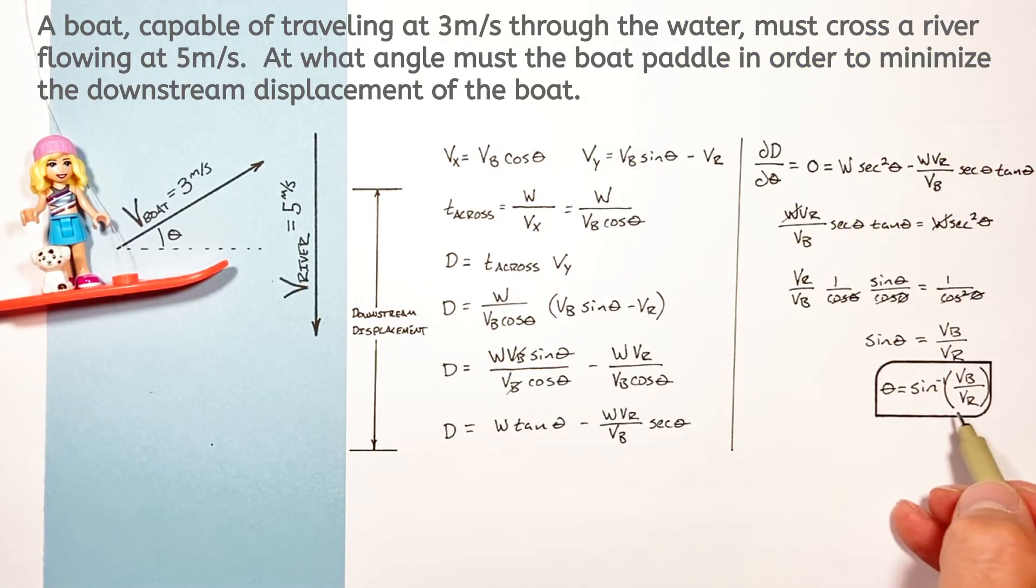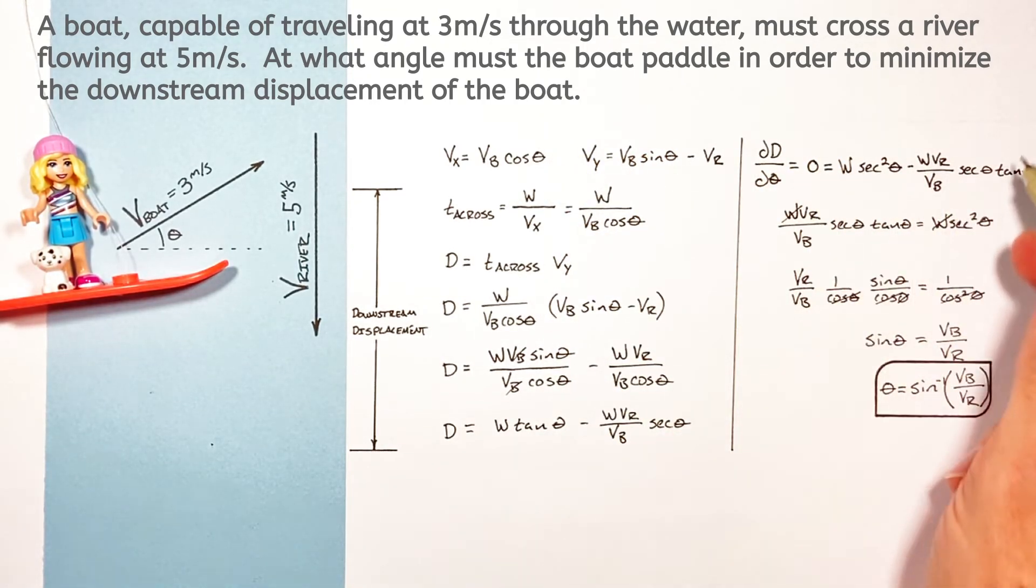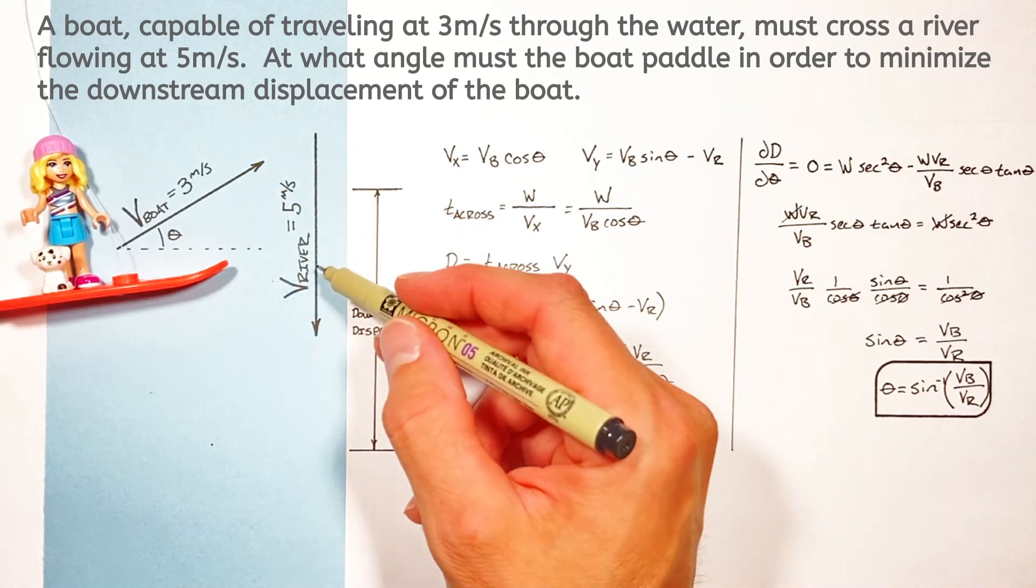This result which I find absolutely amazing. I mean when you look at how much we had to set up here and taking derivatives of some ridiculous stuff we wind up with this really simple function. It's just the inverse sine of the velocity of the boat over the velocity of the river.